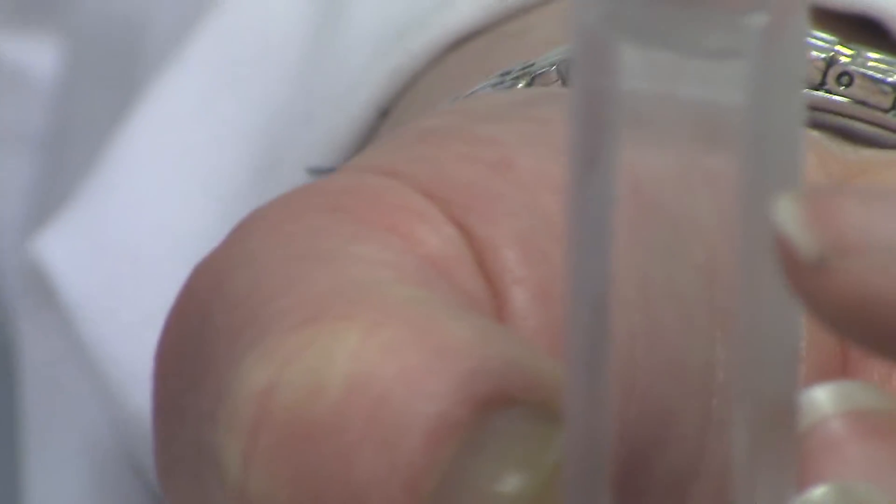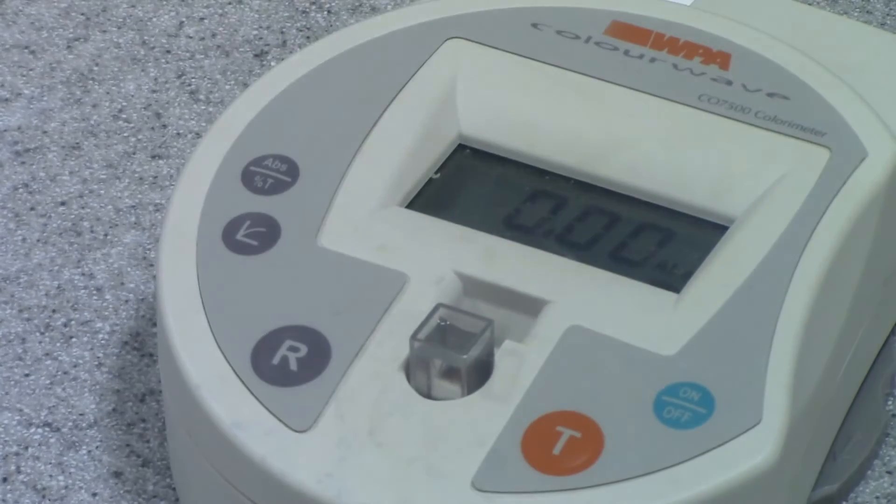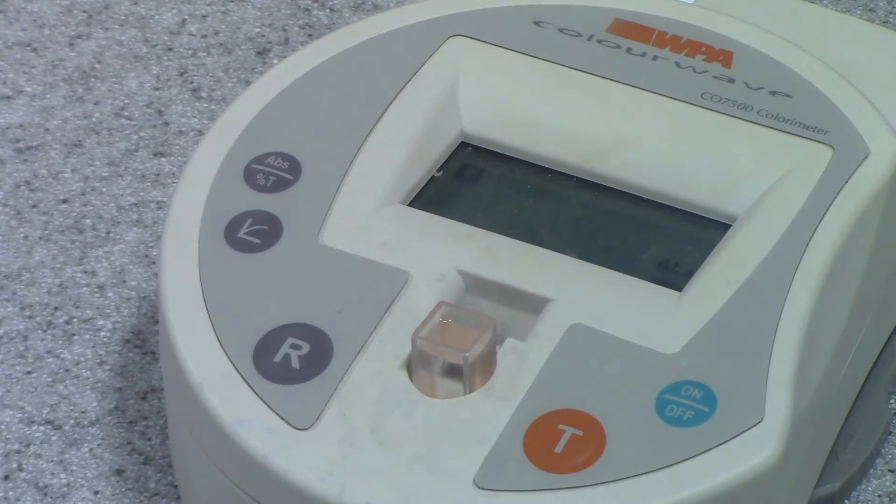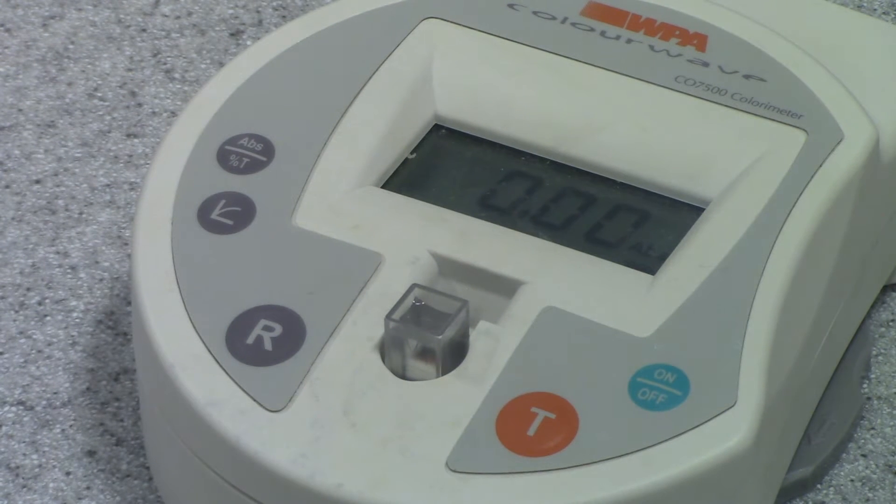There's a little V just on the front of the tube there, and that tells you which way to put it into the machine. So I turn my machine on, I filled it with distilled water, I put my cuvette in and I press R and that should give me a readout of zero because there's no light absorbed because that's distilled water.